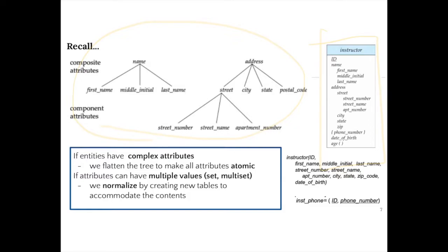Given that description, we can create a table that addresses those data types. For a composite attribute, when we create a table, we flatten the attributes such that all attributes are atomic. If attributes have multiple values — for example, phone numbers of an instructor — we normalize the instructor table by creating a new table to accommodate the phone numbers, storing all phone numbers of a given instructor with a corresponding ID.